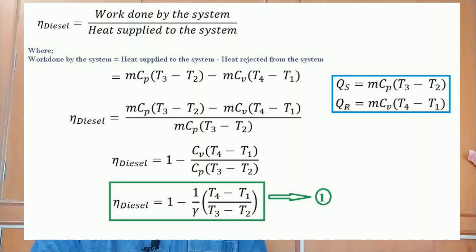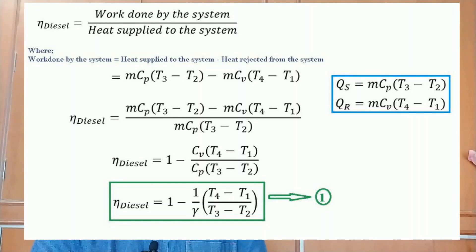From basic thermodynamics, Cp/Cv = γ (gamma), so Cv/Cp = 1/γ. Substituting this into the equation, the air standard efficiency of the Diesel cycle becomes: η = 1 − (1/γ) · (T4 − T1) / (T3 − T2). This is designated as equation number 1.